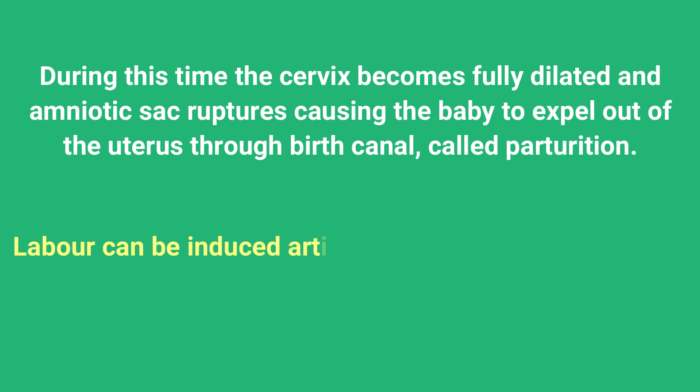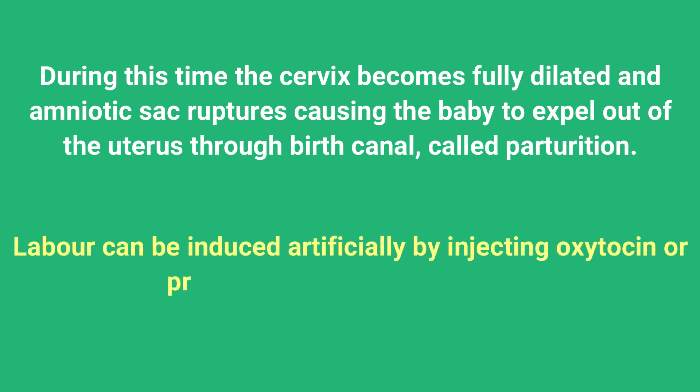Labor can be induced artificially by injecting oxytocin and prostaglandins into the vagina. This is done when the female's oxytocin and prostaglandin hormone levels are lower than normal at the time of parturition, so injections are given to artificially induce labor.